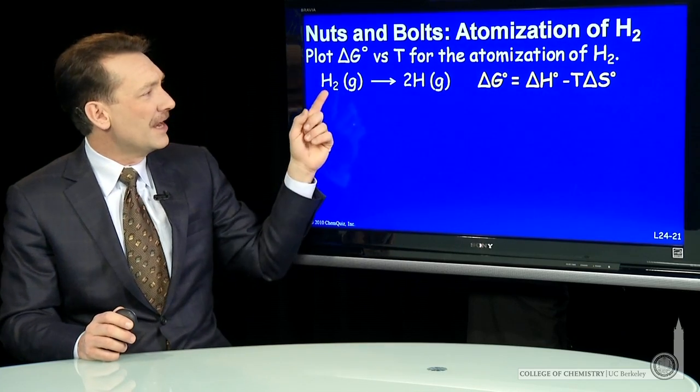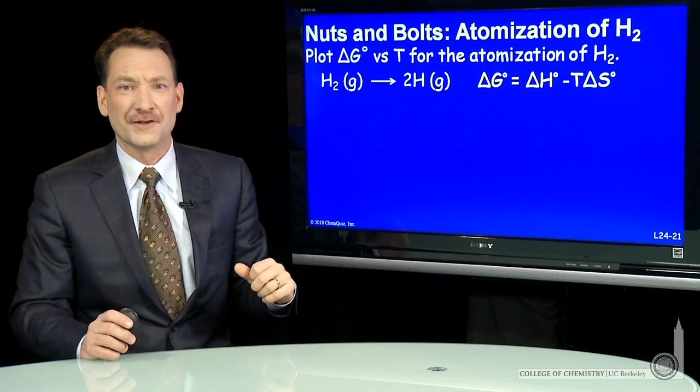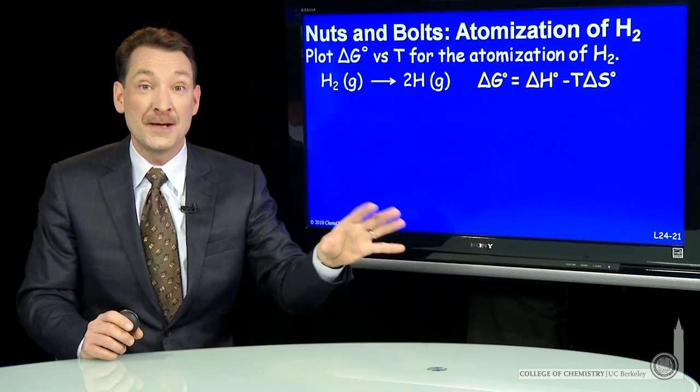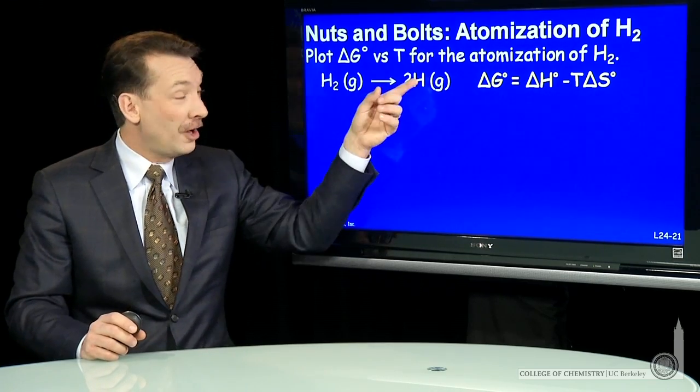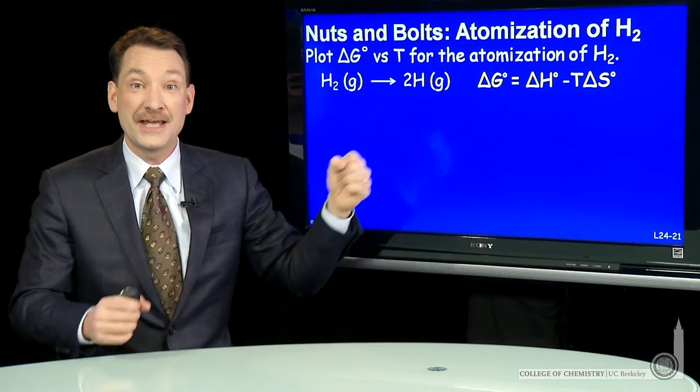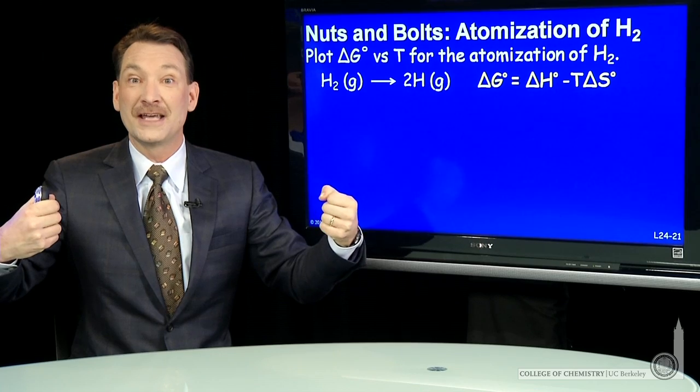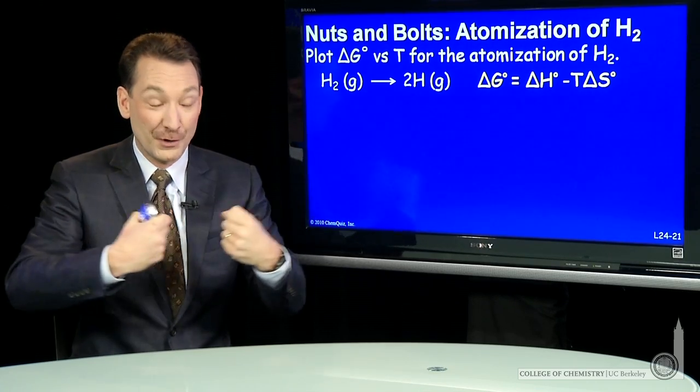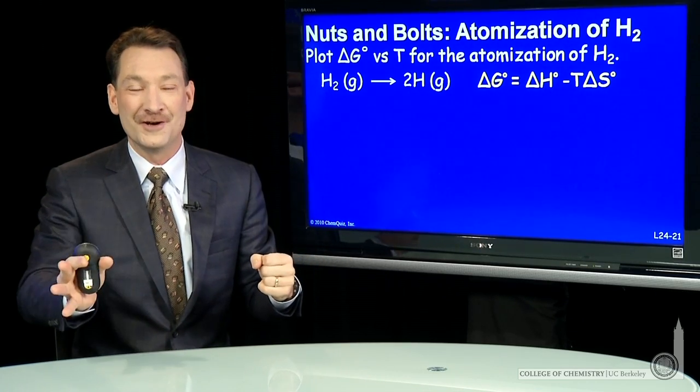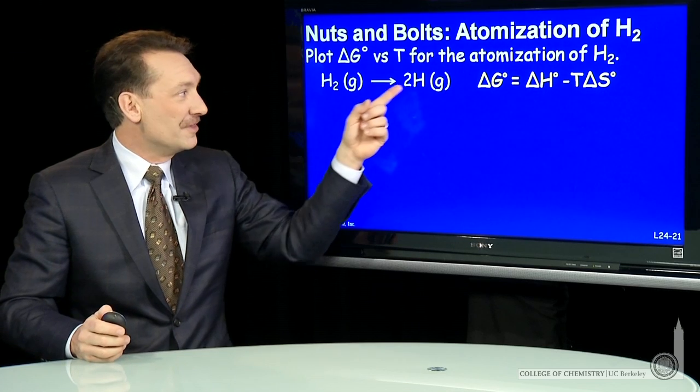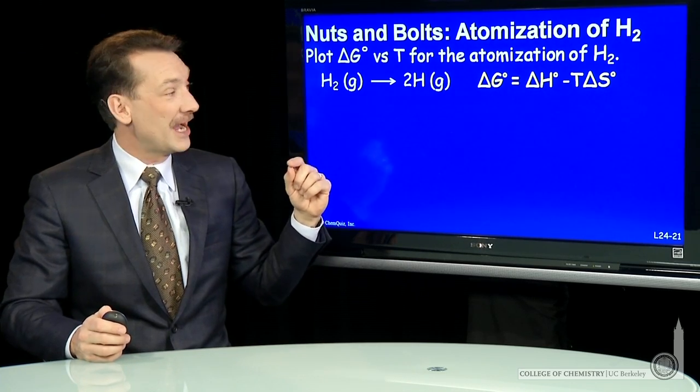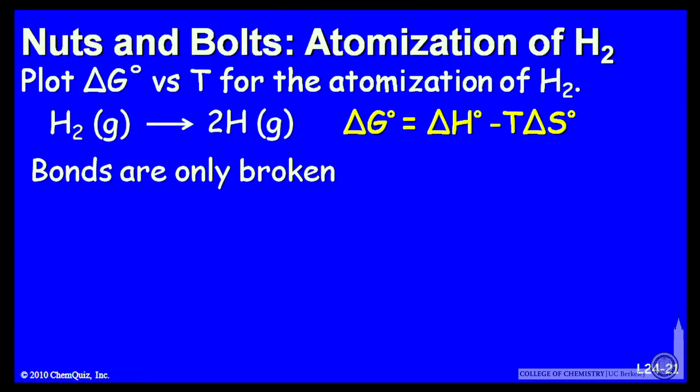So let's look at that. What is the enthalpy difference for this chemical reaction? Well, I don't really have to go to a table or look anything up, because all that is happening here is I'm breaking the hydrogen-hydrogen bond and making hydrogen atoms. And if you break a bond, that requires energy. So this is an endothermic chemical reaction. Breaking bonds always requires energy, so delta H for this is positive.